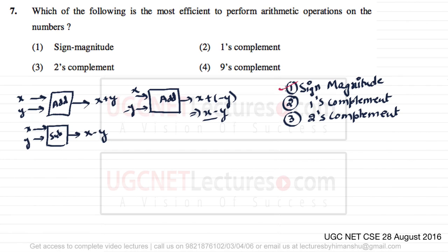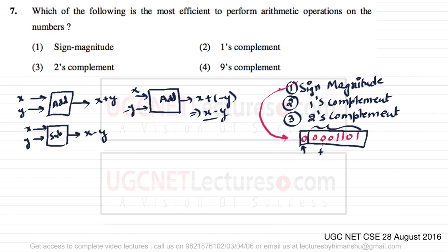In sign-magnitude representation, a positive number has zero in the most significant bit (MSB), and a negative number has one in the MSB. For example, 0 0001101 has MSB zero, so it represents positive 13. To represent minus 13, we put one in the MSB: 1 0001101 — and since the MSB is one, this represents minus 13.